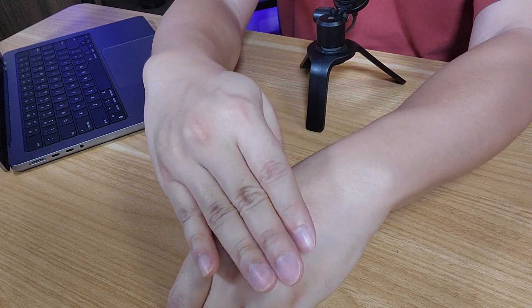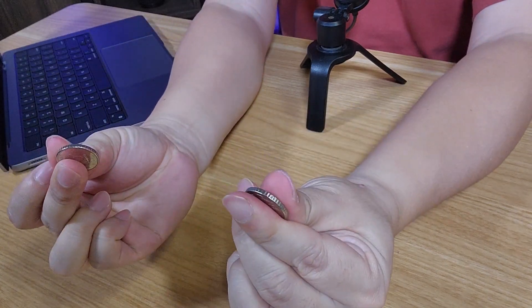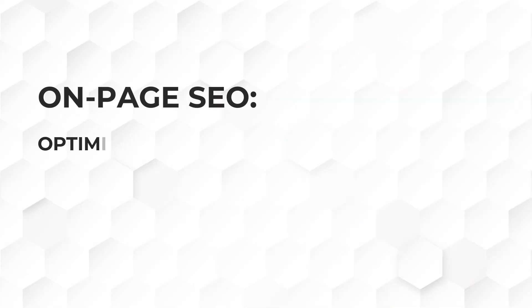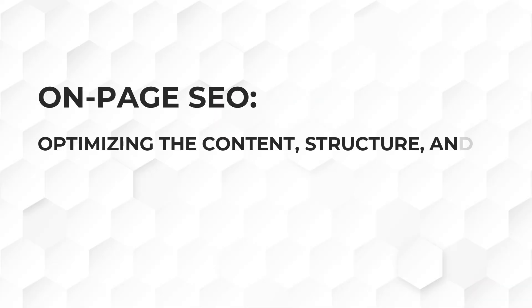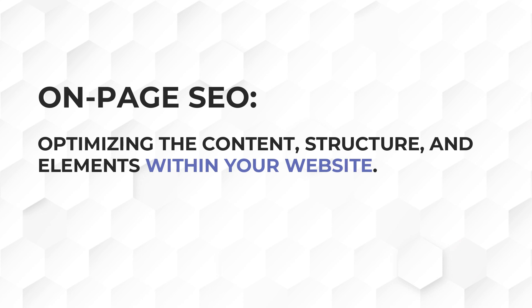On-page and off-page SEO are two sides of the same coin. Both are essential for improving your site's search engine rankings but they focus on different areas. On-page SEO is about optimizing the content structure and elements within your website, making it easier for search engines to understand and rank your site.